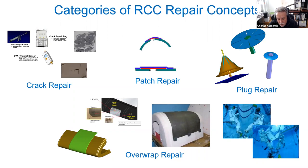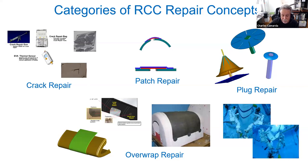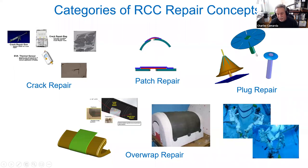When we looked at this problem as a team, we started looking at all the different ways you could potentially repair this wing leading edge. We looked at cases where you have just a small crack — you might put a putty-like material on the outside and smooth it over the surface. You could put a patch over the wing leading edge and secure it by adhesively bonding it. Or you could stuff the hole with a repair and cover it with what we're calling a plug. Then you have other concepts for a very large hole, where you might take a large piece of material, drape it over the hole, and secure it.